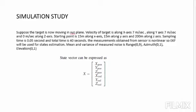The measurement is obtained from the sensor, and since the sensor is nonlinear, the Extended Kalman Filter will be used for state estimation. The mean and variance of measurement noise are: range (0, 9), azimuth (0, 1), and elevation (0, 1). This means the mean of range is 0 and variance of range is 9, mean of azimuth is 0 and variance of azimuth is 1.